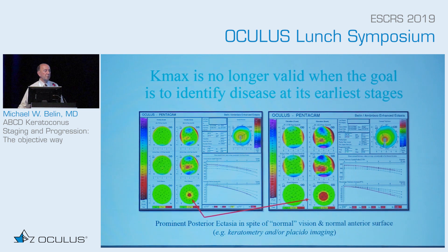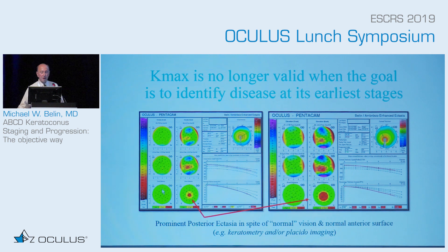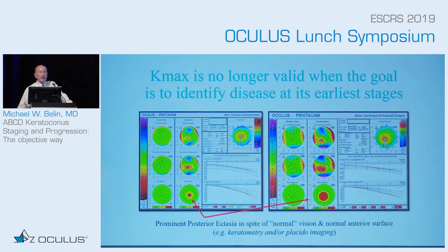For those of you familiar with the Bell and Ambrosia display, you can see here two vastly abnormal eyes. But notice that the anterior surface is completely normal — a highly abnormal eye where every single parameter is abnormal except for the anterior surface. This is true disease. We call it subclinical keratoconus. The patient is relatively asymptomatic because the anterior surface and visual acuity are good, but it's true disease. This is where you want to identify disease.